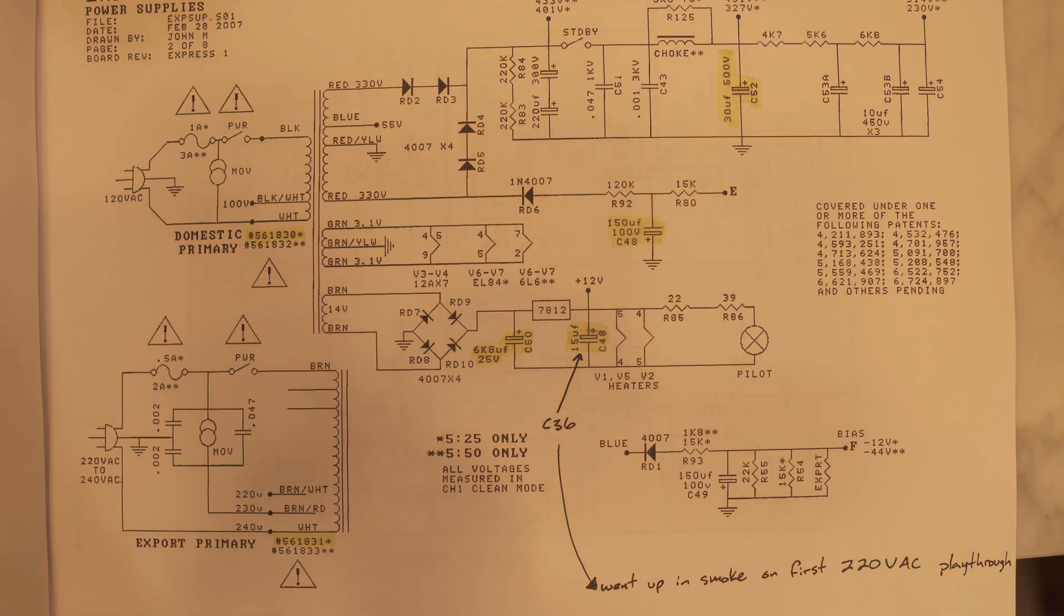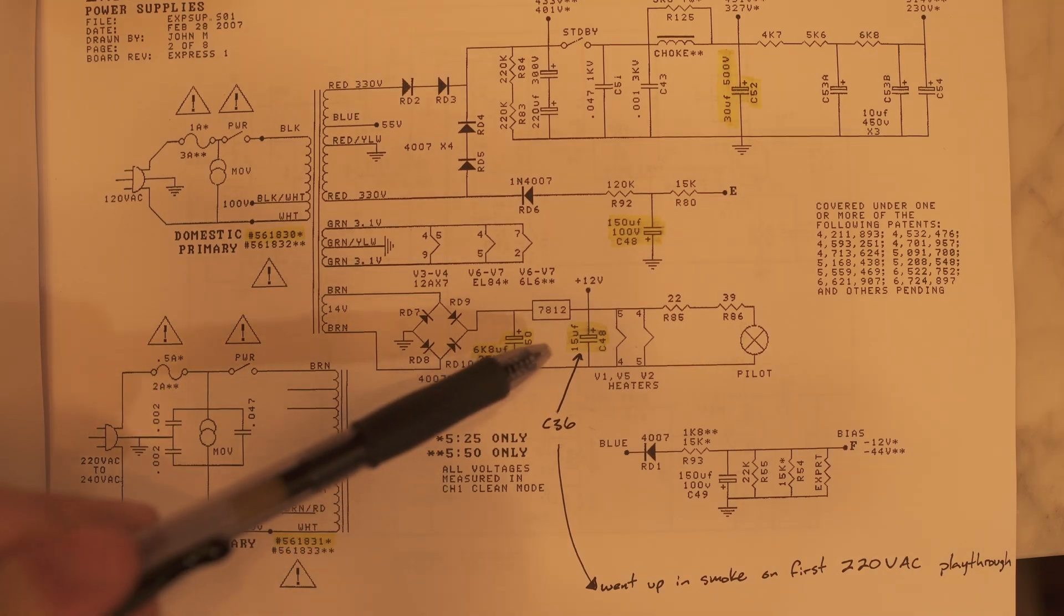So when I first used a step-up transformer and I powered the amp up, I did get pilot lights, everything on. I got sound for a little while, and then shortly after that, it started smoking. So some component in there released the magic smoke. I didn't get that on camera, but what I ended up finding out is that it's a pretty common problem with these Mesa boogies.